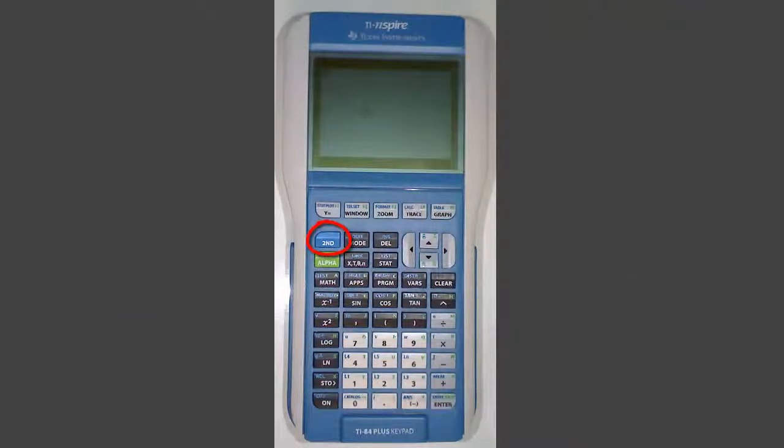Now press 2nd, Mode or Quit in blue. Press 2nd, X to the negative 1 or matrix in blue. The matrix you just created will now be displayed under the Names menu.